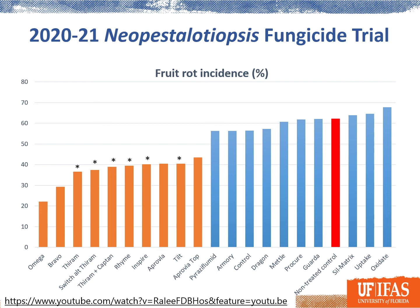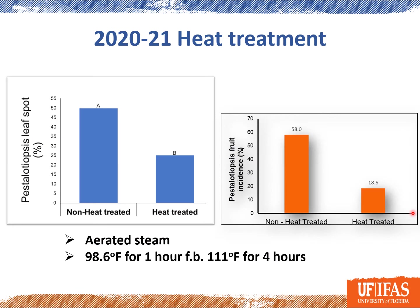If you want to learn more about how we do those trials, check out our YouTube link and the GCRC website — Juliana and I have recorded a video showing how we do these trials. We are also looking at heat treatment as a way for nurseries receiving plant stock from other nurseries to reduce infection coming with that stock. The protocol we have developed is 98.6°F for one hour followed by 111°F for four hours. What we see in those two graphs — for leaf spot and for fruit rot — is that the heat treatment can significantly reduce disease, though it does not completely eliminate it. It might be helpful for nurseries receiving plant stock from suspect sources.